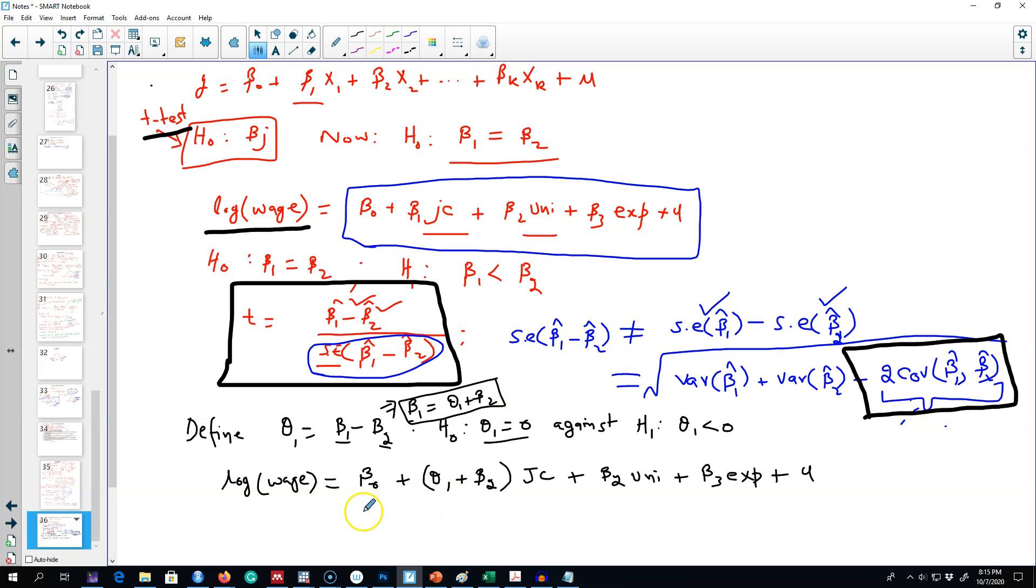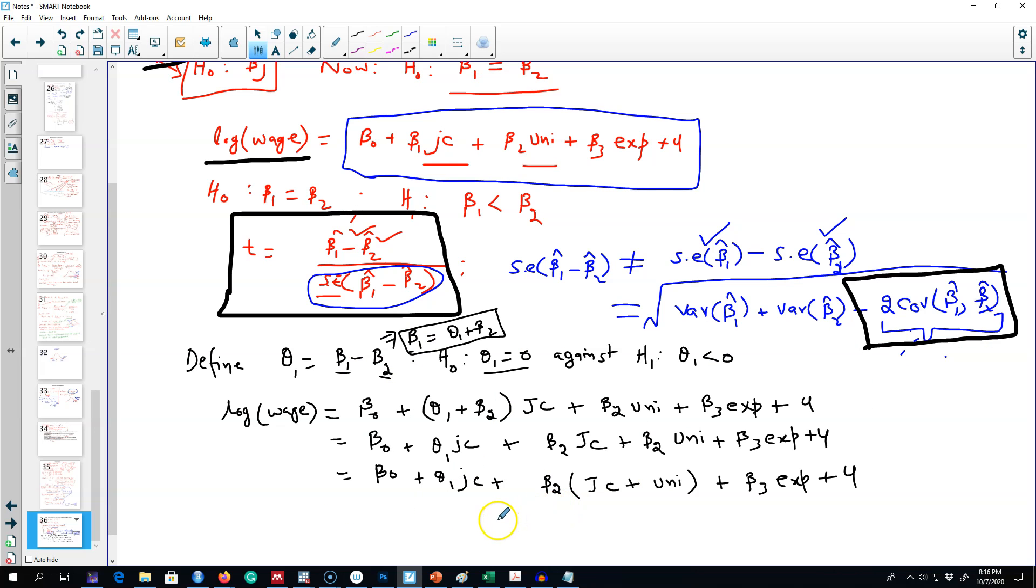We can simplify this model. All we have done here is we have introduced a new variable which is not very difficult to calculate. All we have to do is add junior college and university. So now we will be testing hypotheses about this theta 1. This is our null hypothesis and we can easily test these hypotheses using t test. That's how you test hypotheses about the equality of two parameters by manipulating your regression equation.